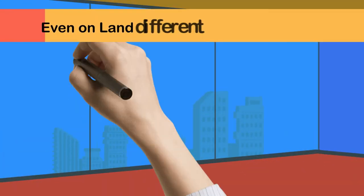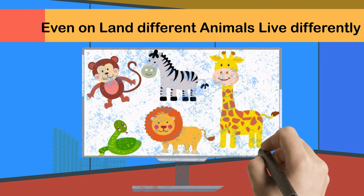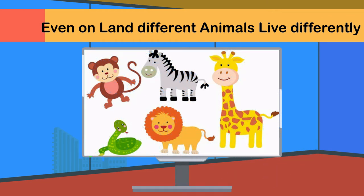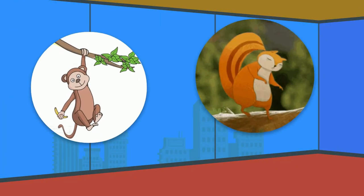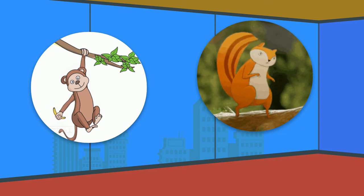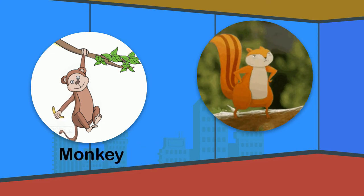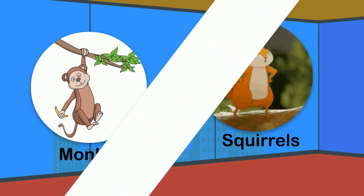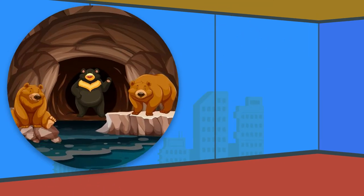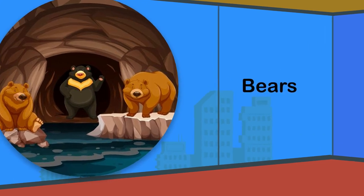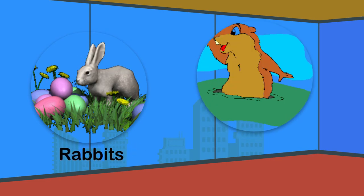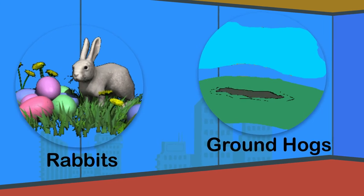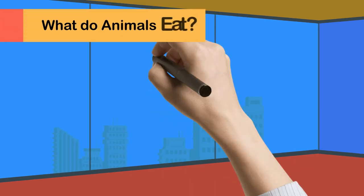Even on land, different animals live differently. For example, some animals live on trees in jungles, such as monkeys and squirrels. Some live in caves, such as bears. Some live underground, such as rabbits and groundhogs.